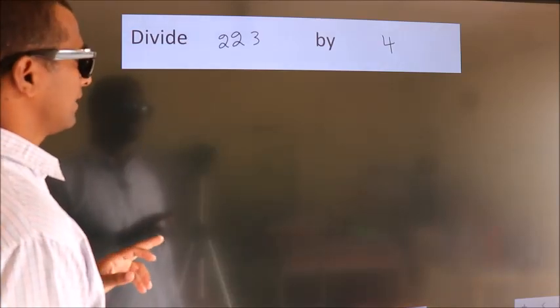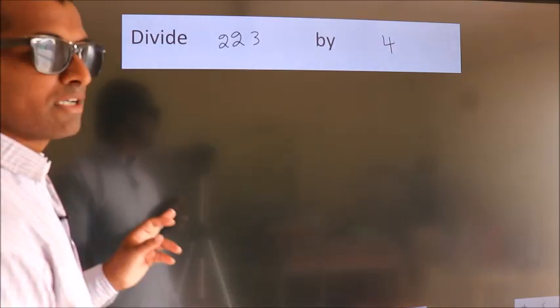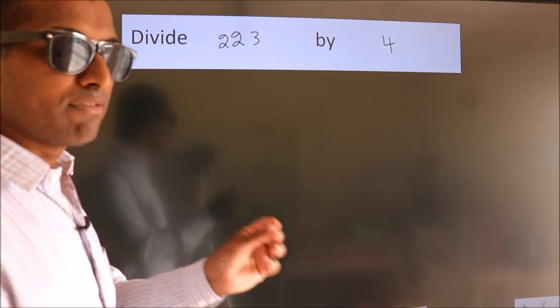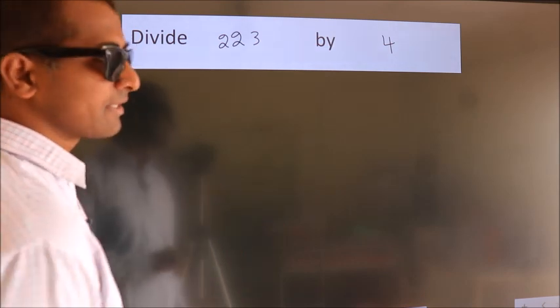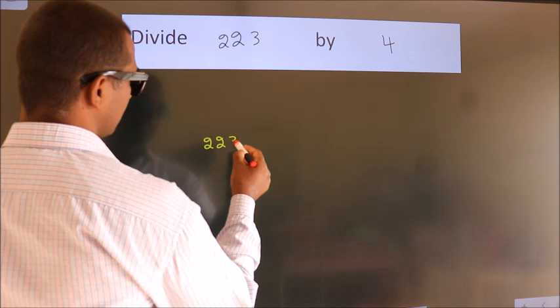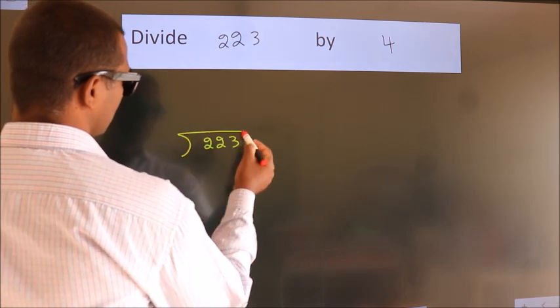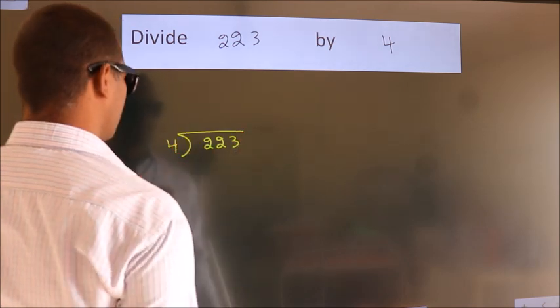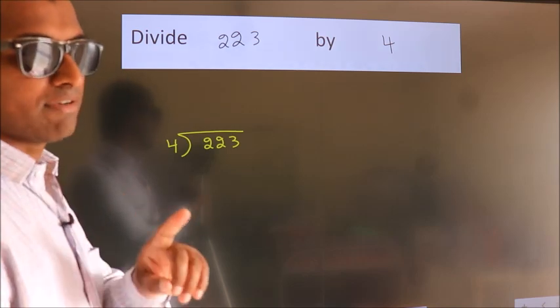Divide 223 by 4. To do this division, we should frame it in this way: 223 here, 4 here. This is your step 1.